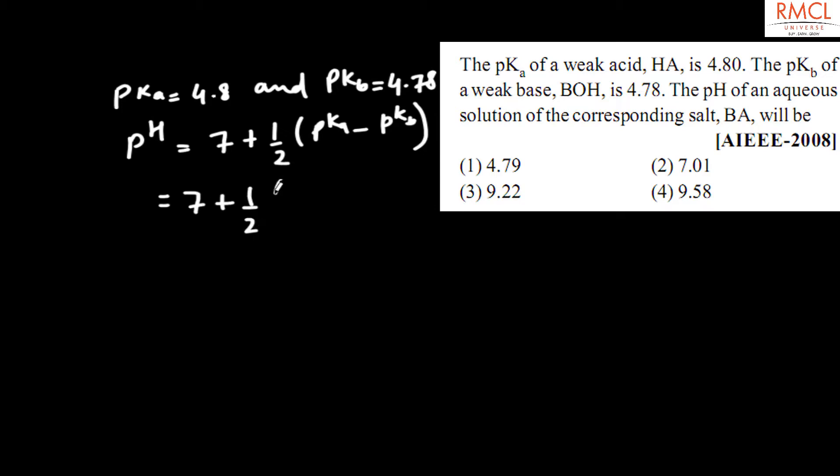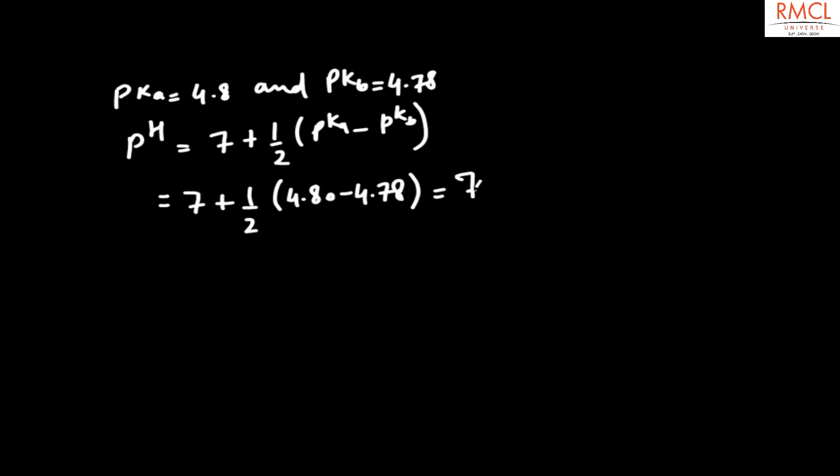4.80 minus 4.78. When we solve this, the value obtained will be 7.01. So the correct option is option 2.